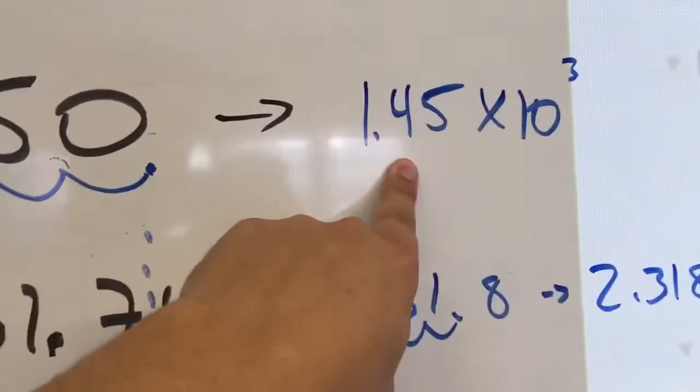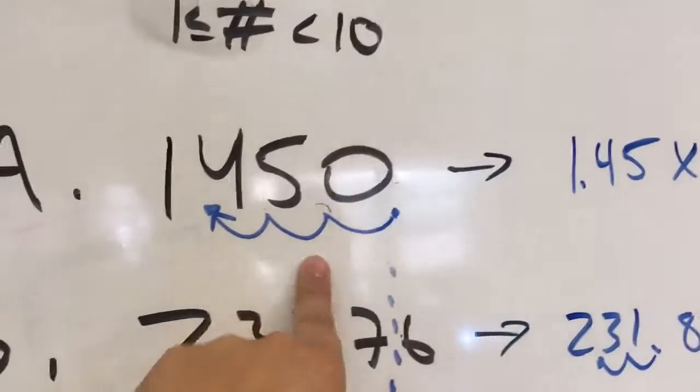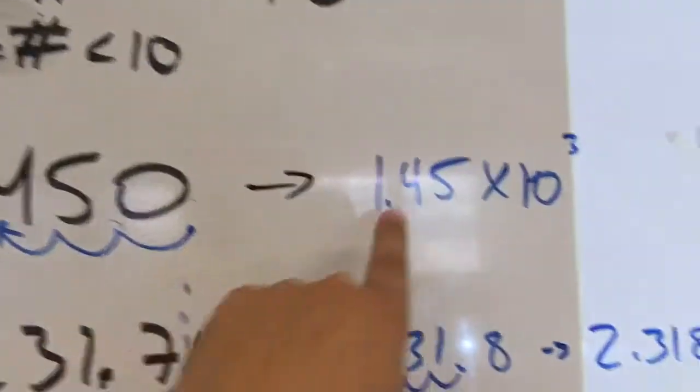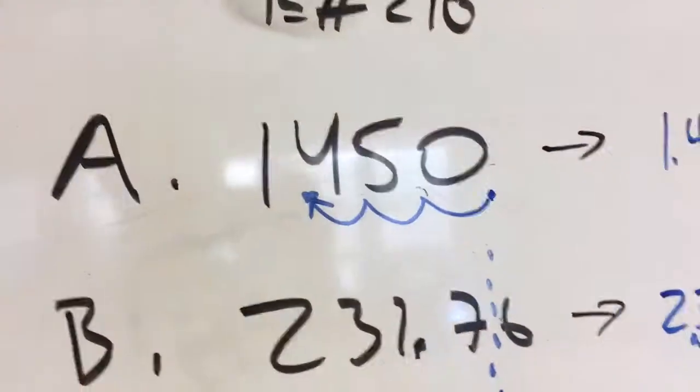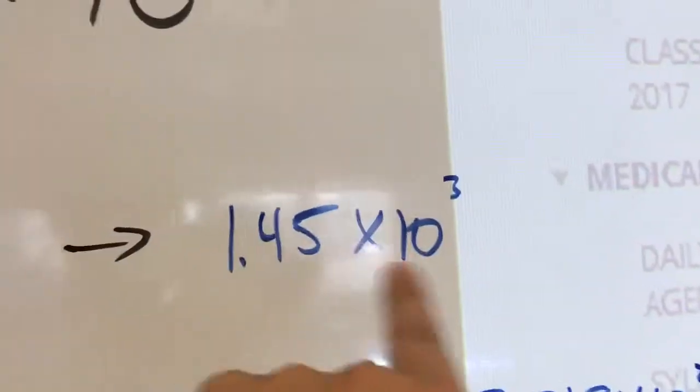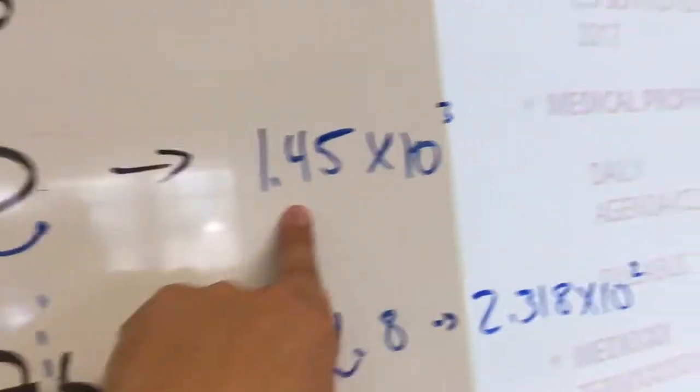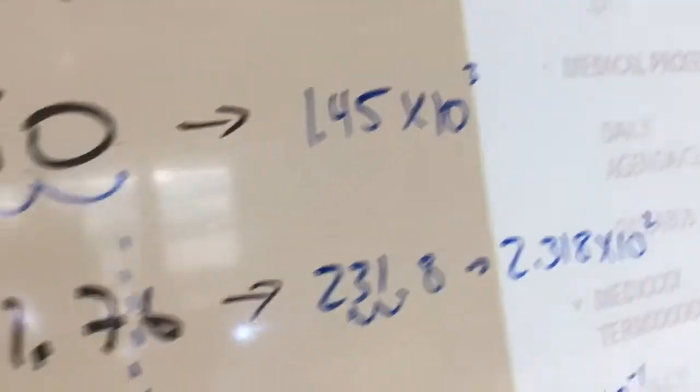And then count those spaces. One, two, three spaces. That means you'd have to multiply this number by ten three times to get it back to its original one thousand four hundred fifty. And so you write one point four five times ten to the three. That's three significant figures and in scientific notation.